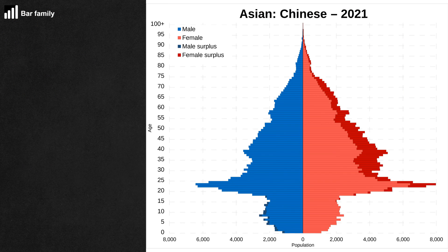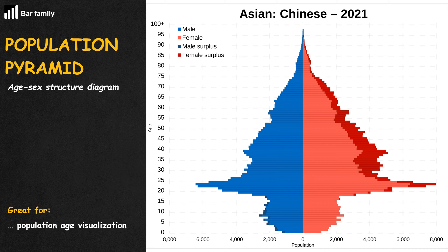One famous application of the diverging chart is the population pyramid, or the age-sex structure diagram. It's so popular that people consider it a graph type of its own.